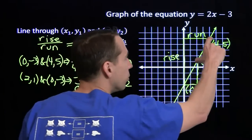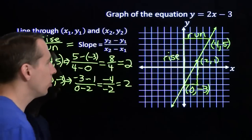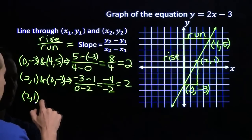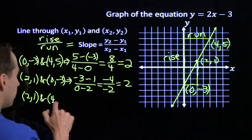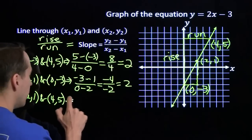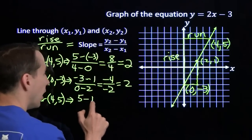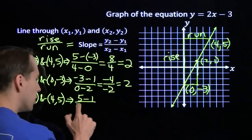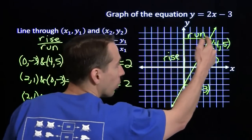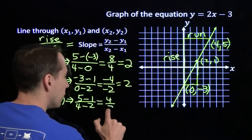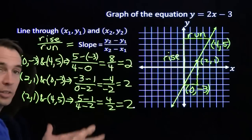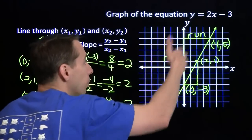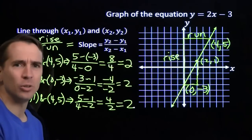We get the same slope whether we went between those two points or these two points. What if we went between (2, 1) and (4, 5)? Difference in the y-coordinates: 5 minus 1, the rise is 4, divided by the difference in the x-coordinates: 4 minus 2, we go to the right by 2. So 4 divided by 2 — once again the slope comes out to be 2. We've taken three different pairs of points on this line and found the slope between them, and we get 2 every single time.